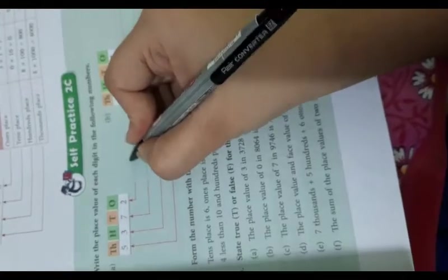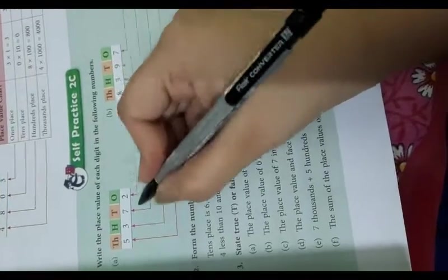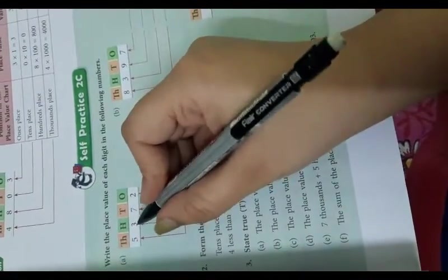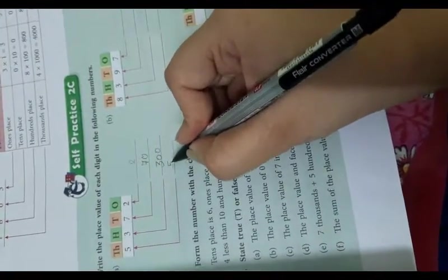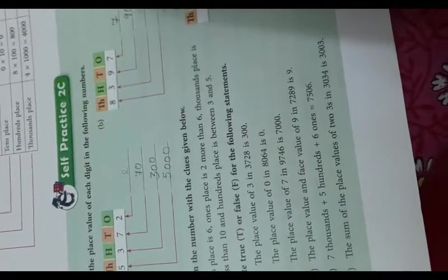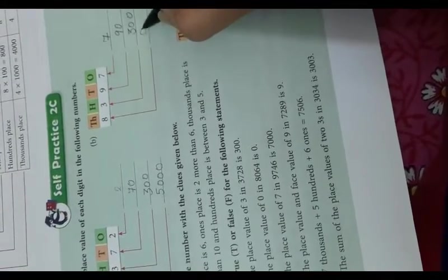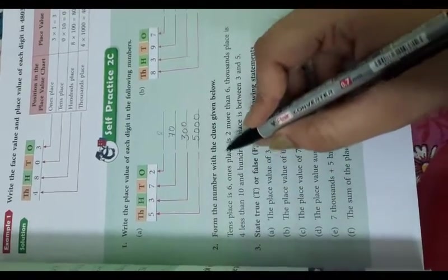You have to write according to ones, tens, hundreds, and thousands. So in the ones place it is two, in the tens place it becomes seventy, in hundreds it becomes three hundred, and if five is in the thousands place it becomes five thousand. Like this, the next number gives seven, ninety, three hundred, and eight thousand.